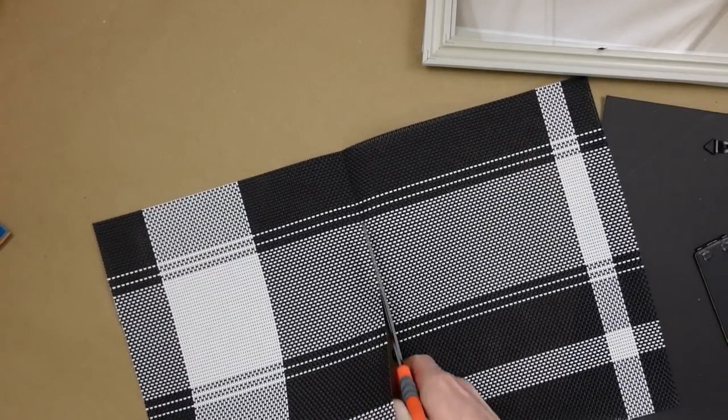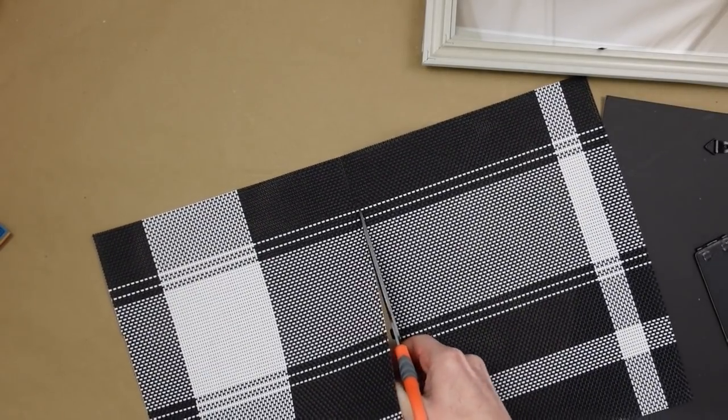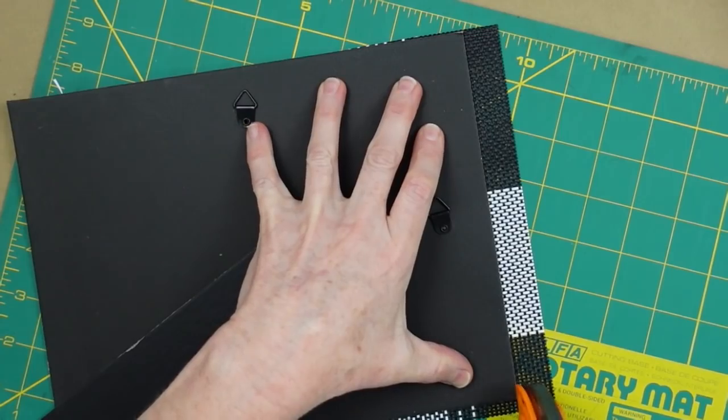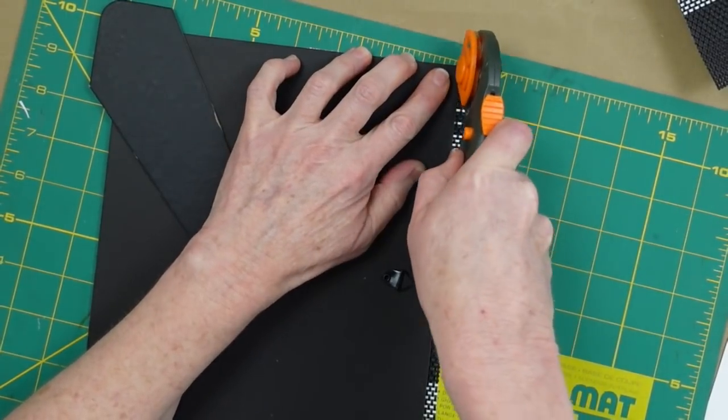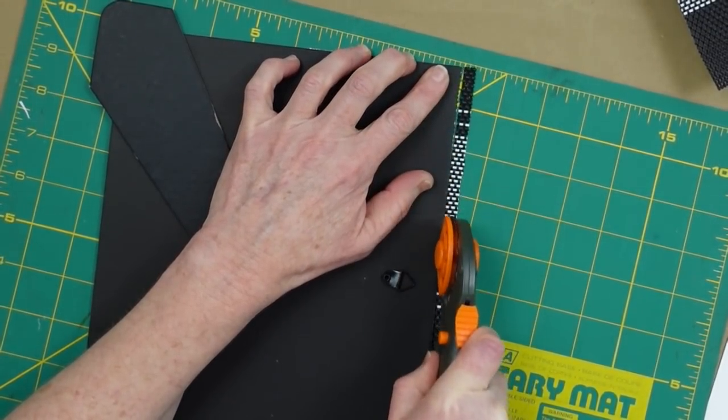Get some good sharp scissors and cut right through it. Now this is not fabric, it's plastic. Just cut through there and then I'm gonna use my rotary tool to trim it down to make it the same size as the backing.